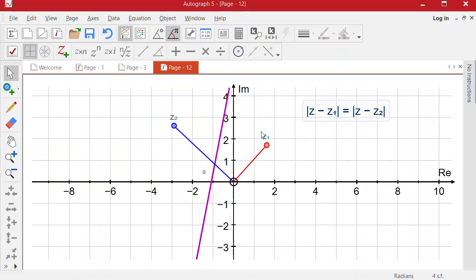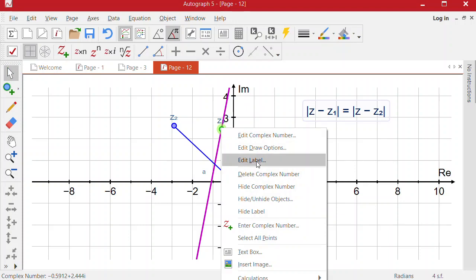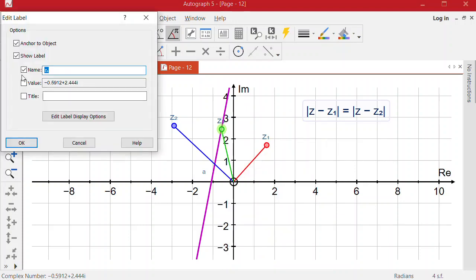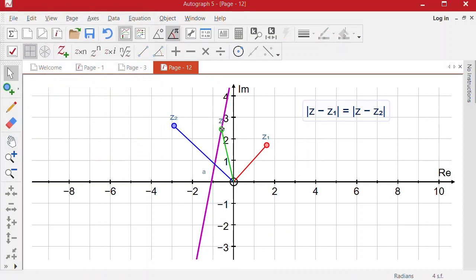So I've got my line, I'll put a complex number onto that line and right click on that and edit the label. I'm going to call it z rather than z3. And if I just move that point, you can see it's lying on that perpendicular bisector.